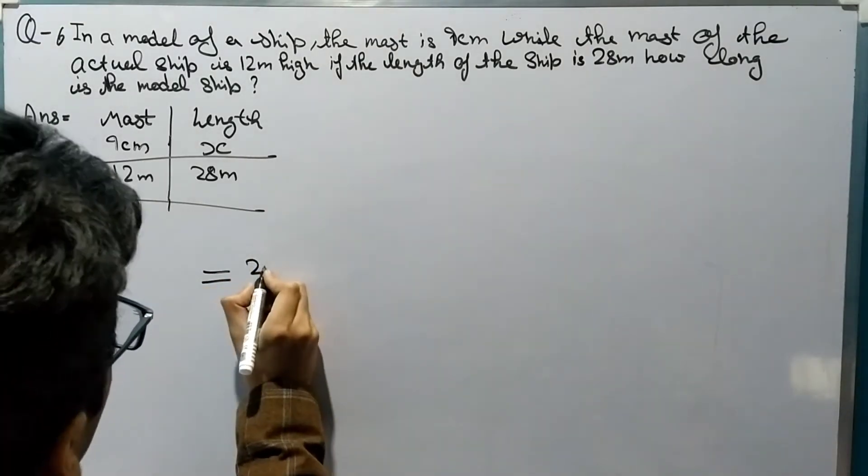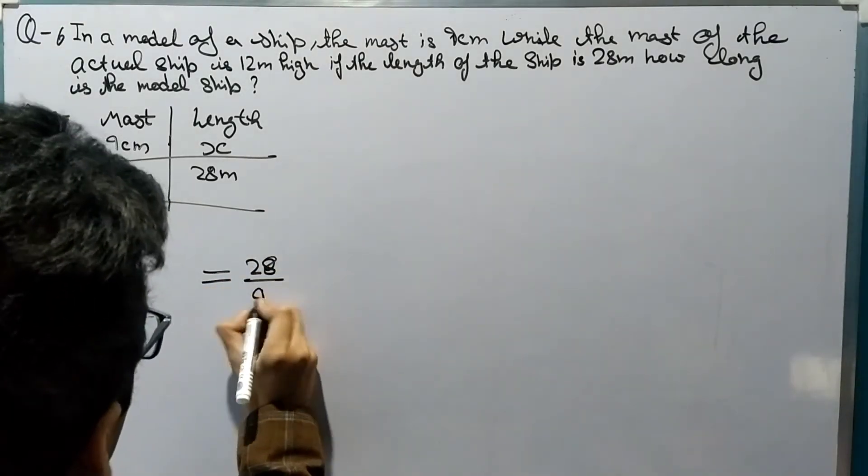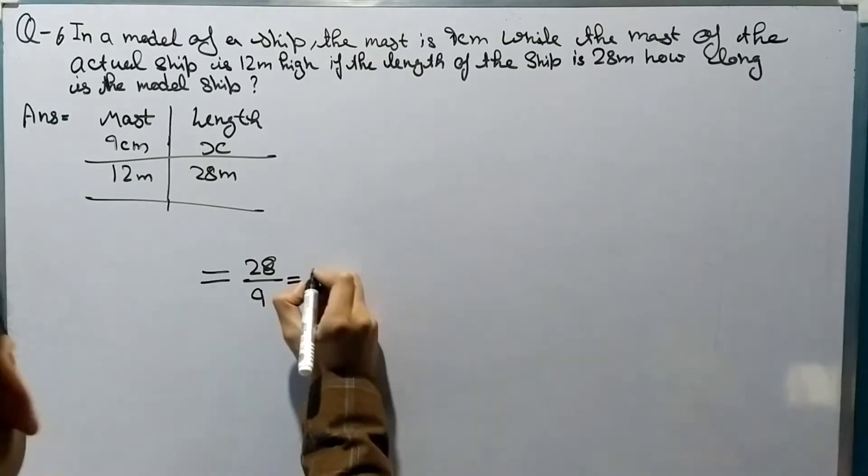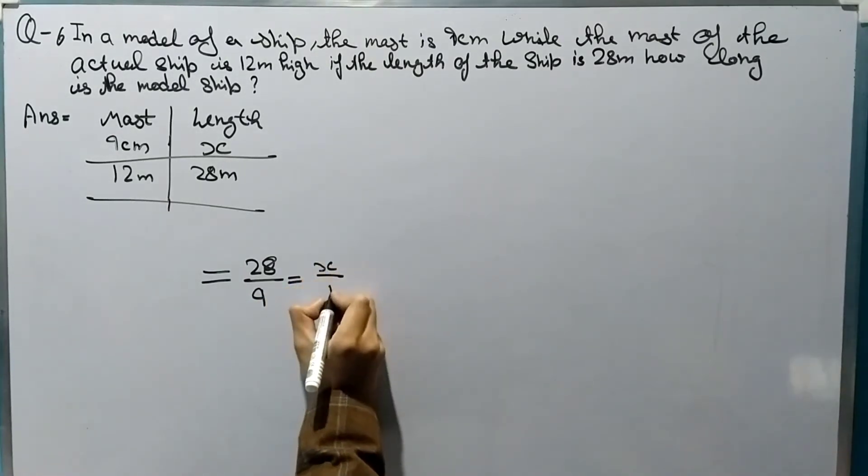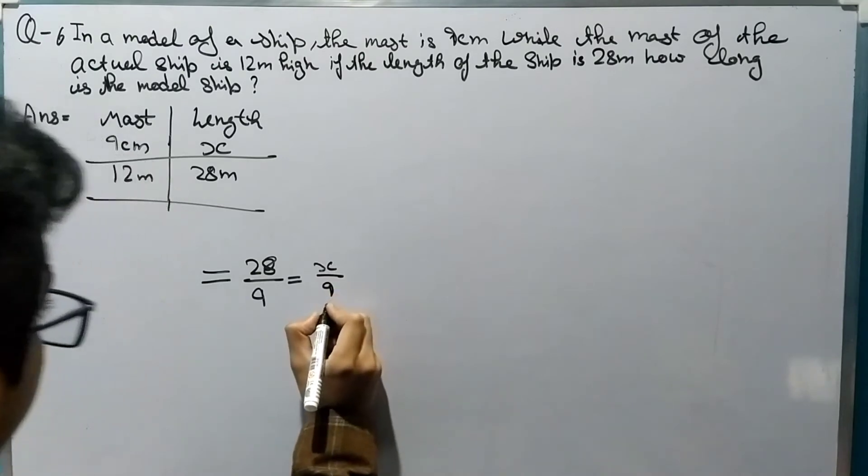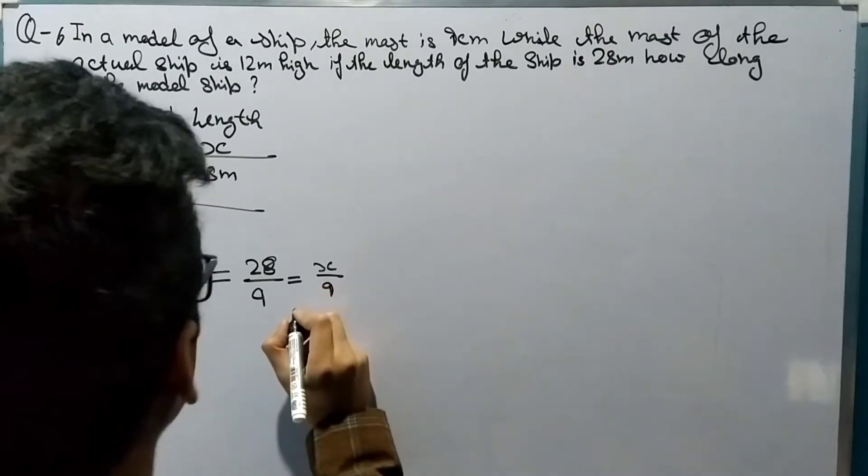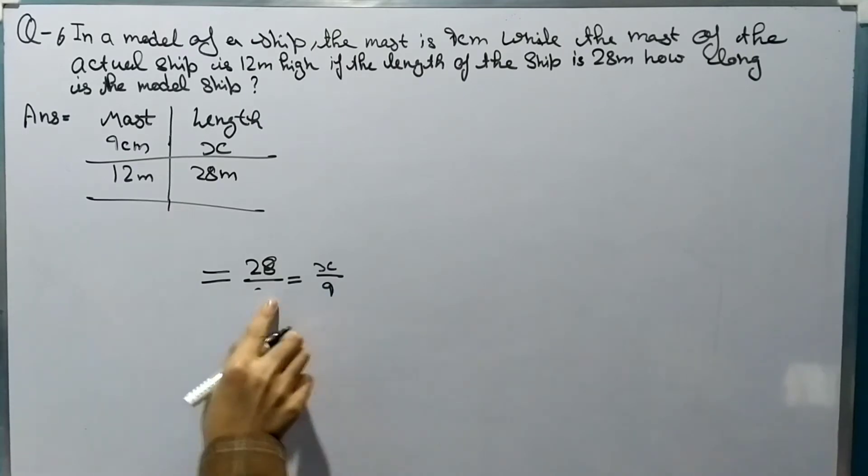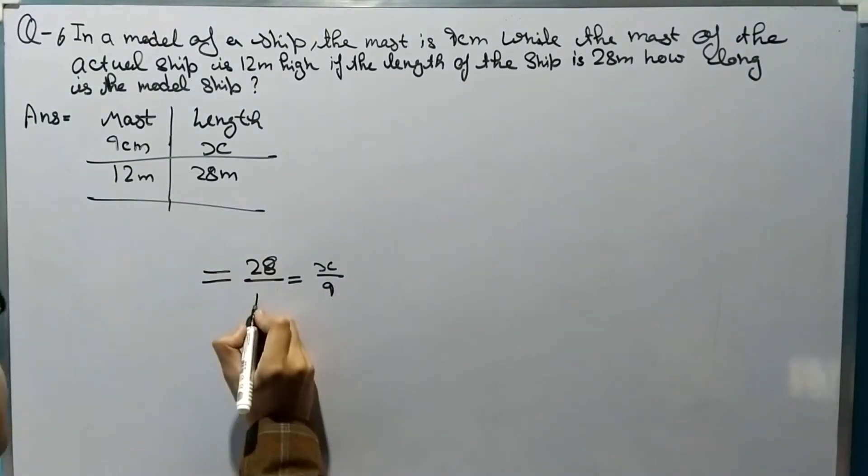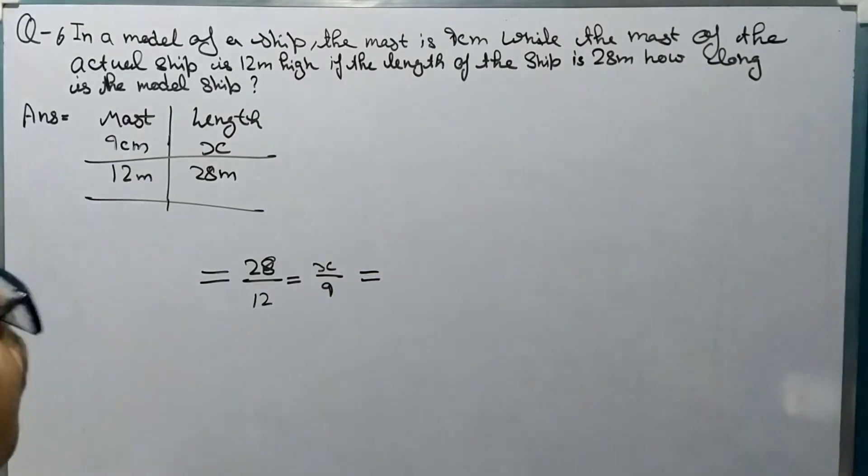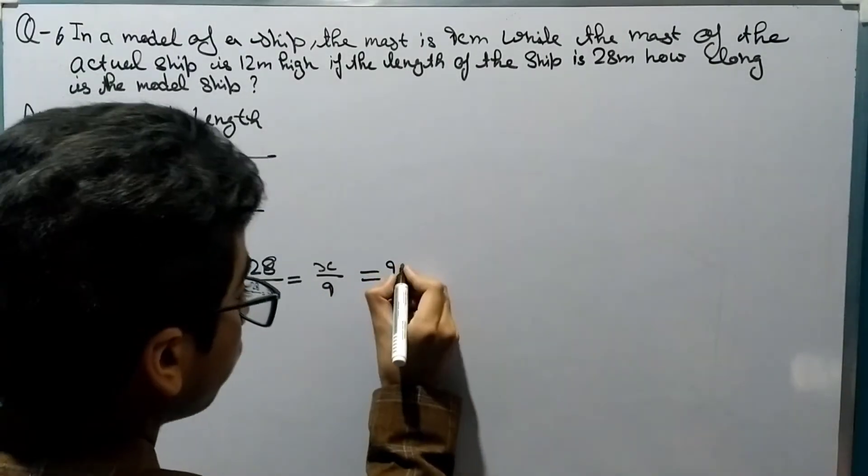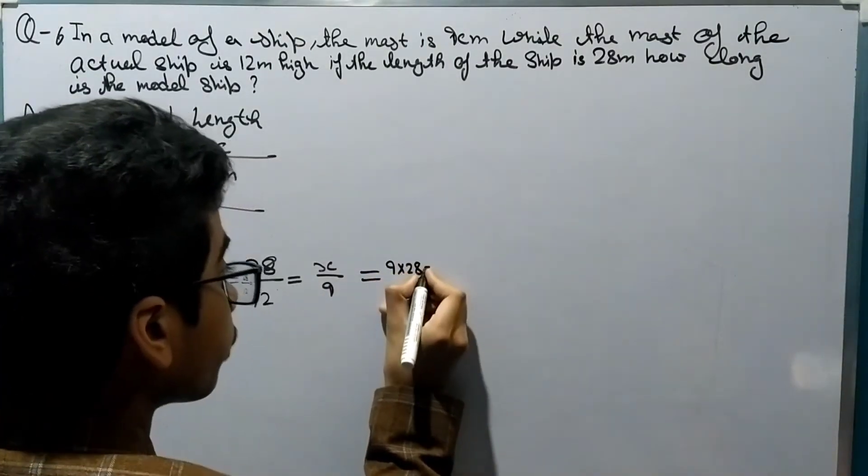So it will be 28 over 9 is equal to x over 12. So now let's cross multiply it. So it will be 9 times 28 is equal to 12 by x.